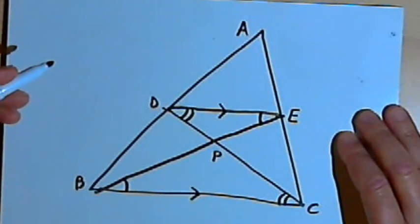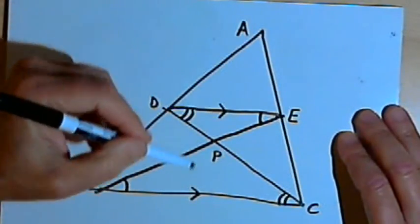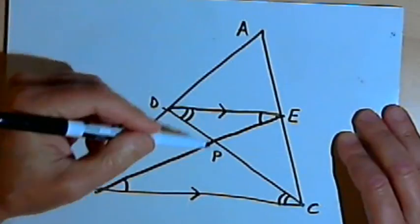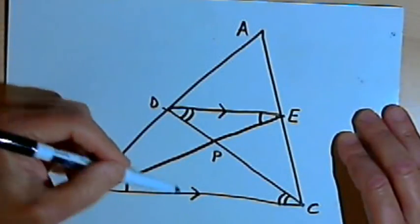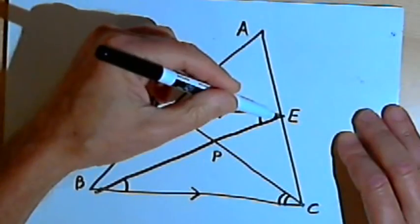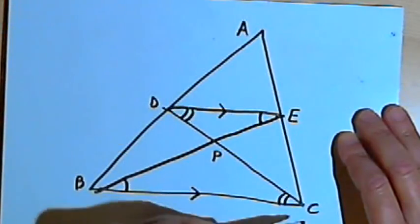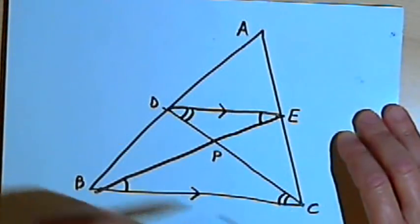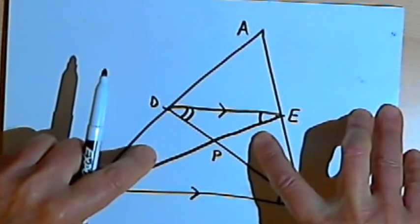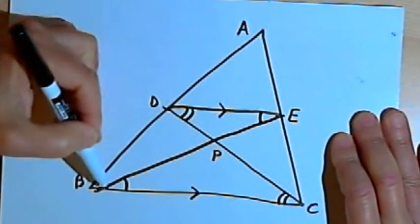If I've got two similar triangles, the sides are proportional. The ratios of the sides will be the same. So if side DE is one half as long as side BC, then that means for another pair of corresponding sides, like EP and PB,